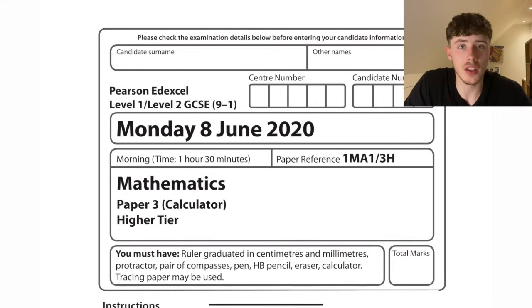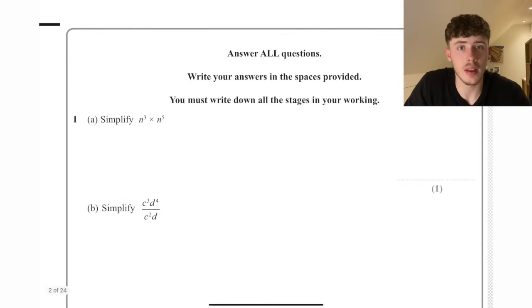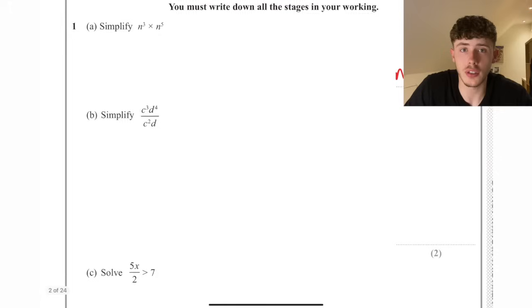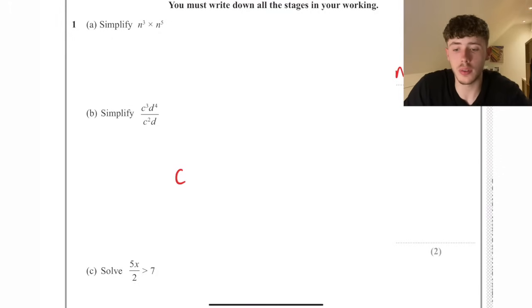So here is a GCSE Maths Higher Edexcel paper 3. Question number one, simplify n cubed times n to the 5. That's just going to be n to the 8 because we add the powers.